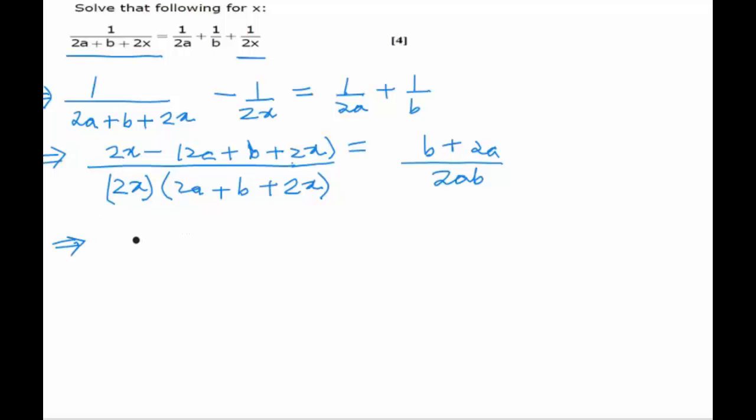First of all we see in the numerator we get minus 2a minus b since 2x and 2x cancels out, and this 2 and this 2 also cancels out. So we are left with minus of 2a plus b upon x times 2a plus b plus 2x.